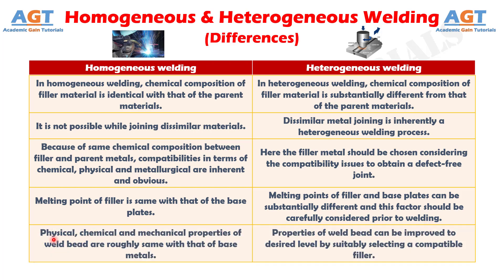Difference number 5: In homogeneous welding, the physical, chemical, and mechanical properties of the weld bead are roughly the same as that of the base metals, whereas in heterogeneous welding, the properties of the weld bead can be improved to a desired level by suitably selecting a compatible filler.